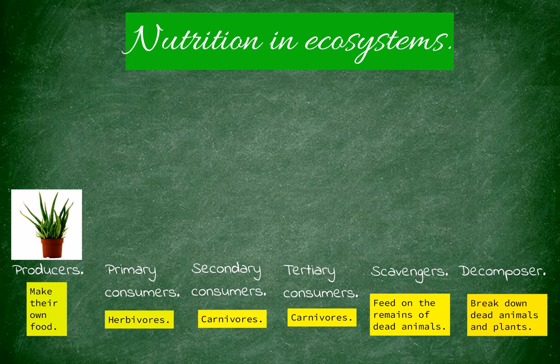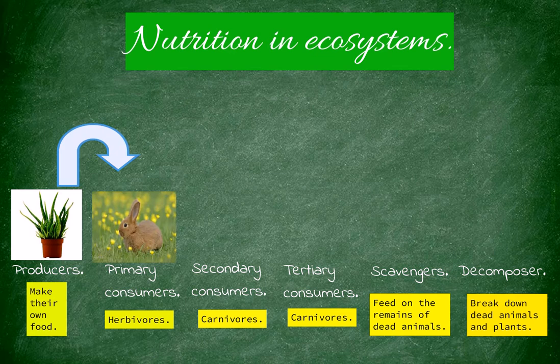Let's go now with primary consumers. Primary consumers feed on producers, so they are herbivores. For example, this rabbit.